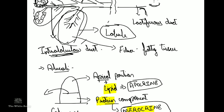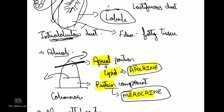The columnar epithelium of the alveoli secretes two components: a lipid component and a protein component. The lipid component is given off from the apical portion of the gland — this is an apocrine secretion because the tip of the gland is pinched off while the lipid component is secreted. The protein component is secreted from the basal part of the columnar gland and is a merocrine secretion, because the protein component is secreted through exocytosis.